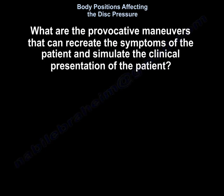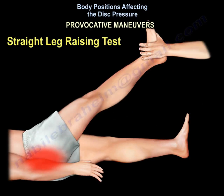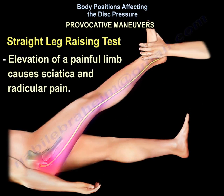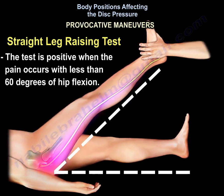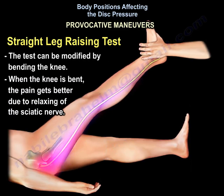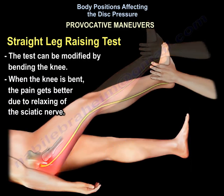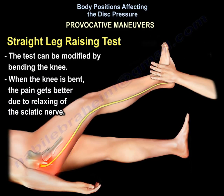What are the provocative maneuvers that can recreate the symptoms of the patient and simulate the clinical presentation? One of the most important tests is the straight leg raising test. Elevation of a painful limb causes sciatica and radicular pain. The test is positive when the pain occurs with less than 60 degrees of hip flexion.